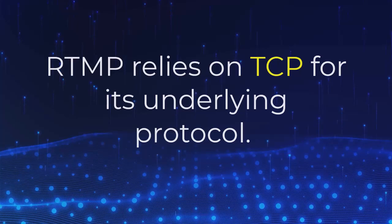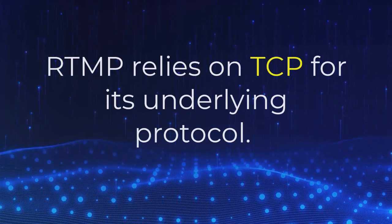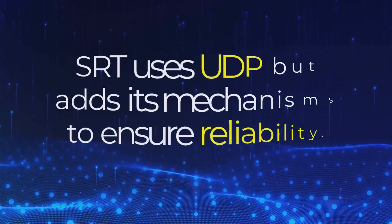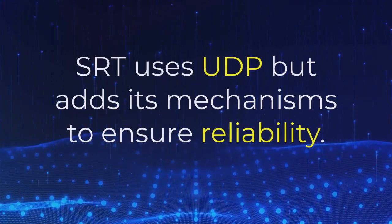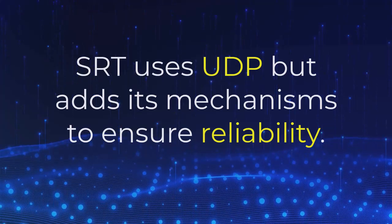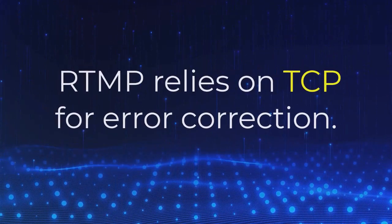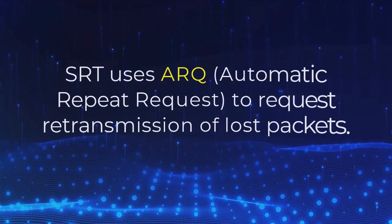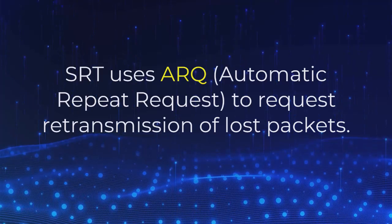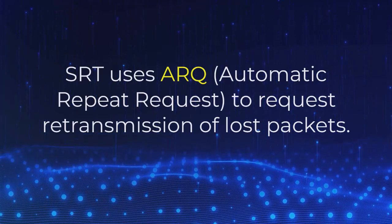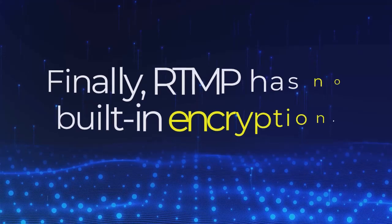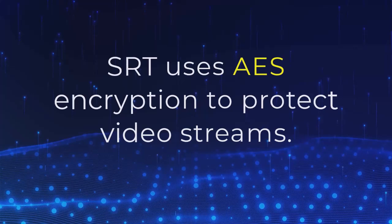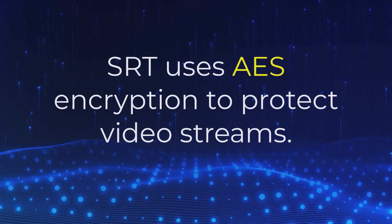RTMP relies on TCP for its underlying protocol, guaranteeing delivery in the correct order. SRT uses UDP but adds its own mechanisms to ensure reliability. For error correction, RTMP relies on TCP, while SRT uses ARQ, Automatic Repeat Request, to request retransmission of lost packets. Finally, RTMP has no built-in encryption, whereas SRT uses AES encryption to protect video streams.